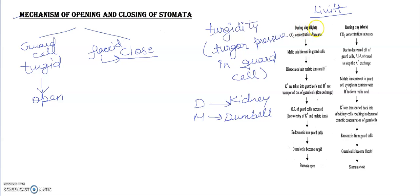I think you all know during day there will be the process of photosynthesis. And if there will be the process of photosynthesis, CO2 concentration gets decreased because photosynthesis requires CO2 as a raw material. And here malic acid is formed in the guard cell. And this malic acid will dissociate into malate ion and H+.